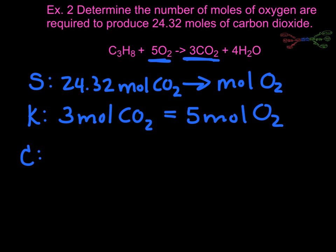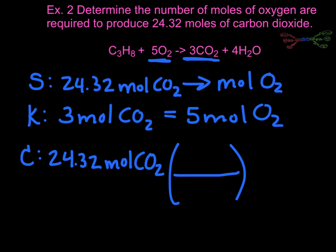Now all that's left is our calculation. We always start with the given value and its unit and chemical. So we have 24.32 moles of carbon dioxide, and we build our conversion factor. We want to get rid of moles of carbon dioxide and go to moles of oxygen, and the numbers follow. Three moles of carbon dioxide to five moles of oxygen. Again, this is our mole ratio, and we got our numbers from the chemical reaction. That's why it was important for you to have that in your notes.